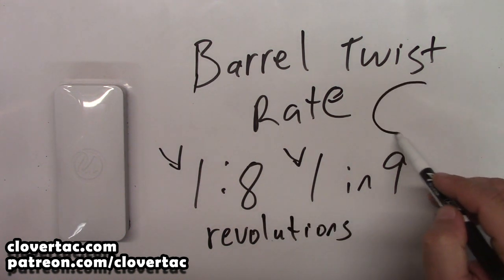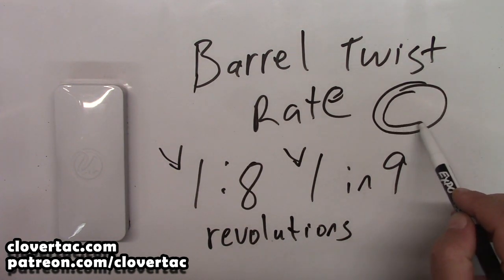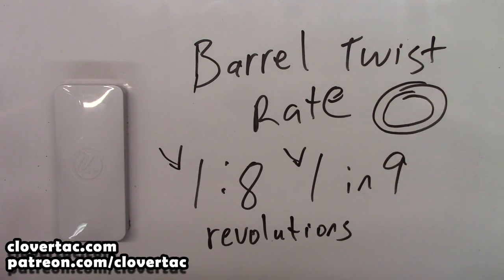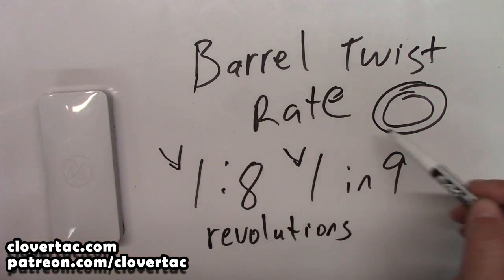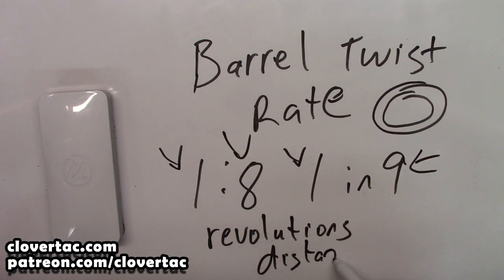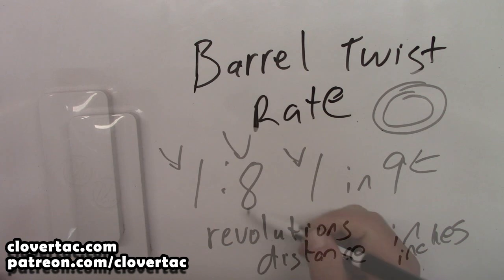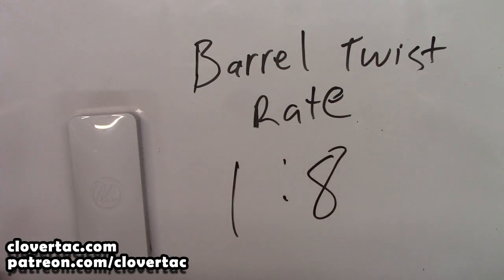If you remember when we drew our barrel looking down the end, that revolution would be one revolution — spins that projectile completely around one time. Now the second number here is the distance, and that is in inches. So if we've got a one-in-eight twist, that means we're going to have one revolution per eight inches of barrel.